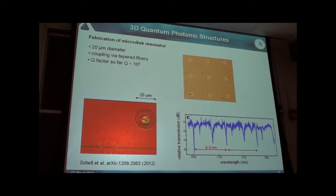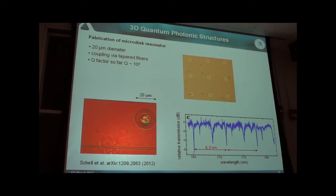First characterization of these resonators: we like resonators to enhance interaction of single quantum emitters with the electromagnetic field. This sample has disks 20 micrometers in diameter. You can couple light via an optical fiber taper and measure the typical spectrum of such a resonator. Everything works well. The Q-factor is not extremely large — 10^4 here — but it can be improved by reflow processes already developed for these plastic structures.